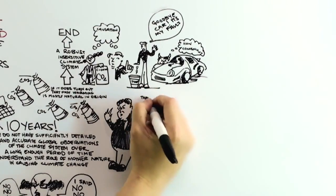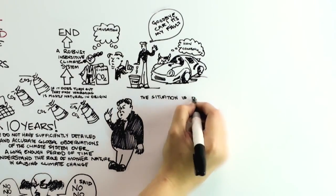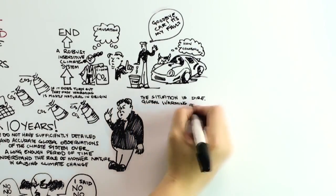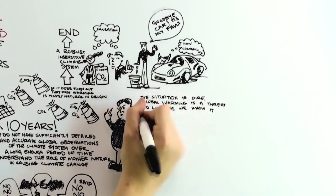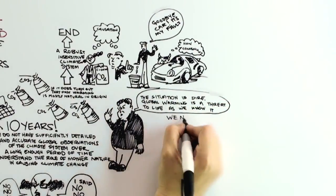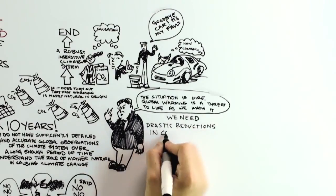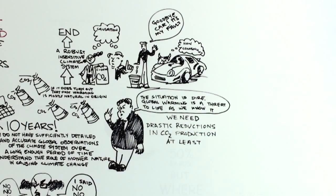If global warming is in fact man-made, and if the dire predictions of Al Gore and his friends are to be believed, and all of this warming is indeed a threat to life as we know it, then what we really need are drastic reductions in our production of carbon dioxide in the coming decades, at least 50% reductions by 2050.